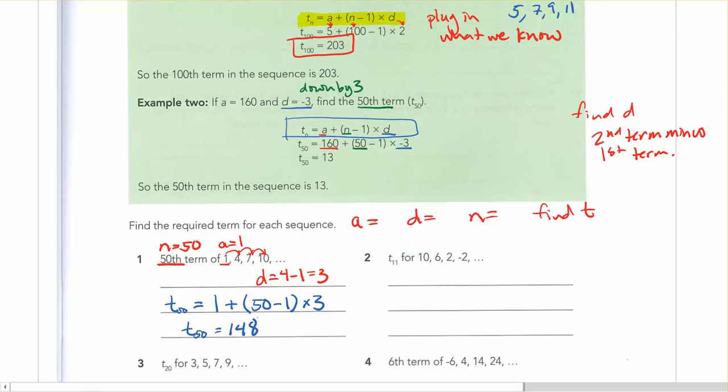So if you look at another example here, again thinking about identifying what we know. a in this case is 10. And d, well, let's think about this. We're going from 10 to 6 to 2 to negative 2. We're going down, so it should be a negative number. So I'm going to take the second one, 6, subtract the first one from it. And I'm going to get a negative 4. So d is equal to negative 4.